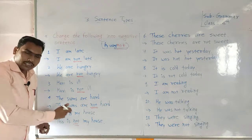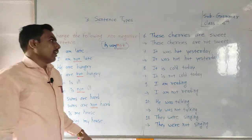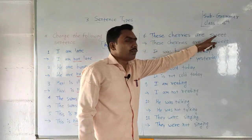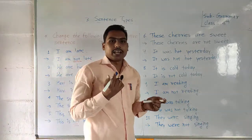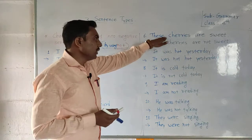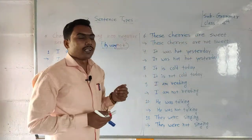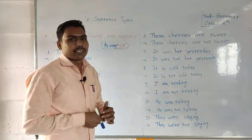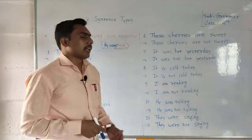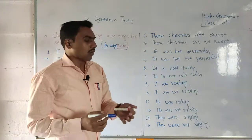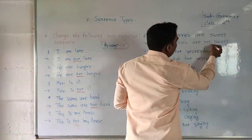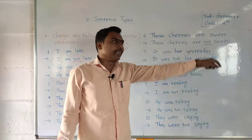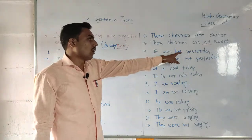The next example is: 'These cherries are sweet.' Do you know cherries? It is one type of fruit. So, 'These cherries are sweet' is a positive sentence. We convert it into negative using 'not': 'The cherries are not sweet.'